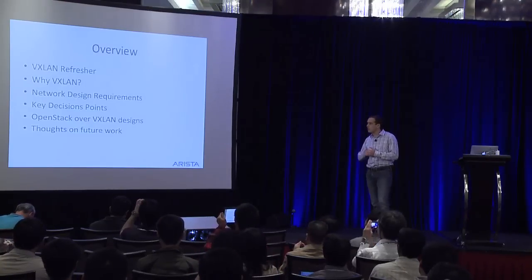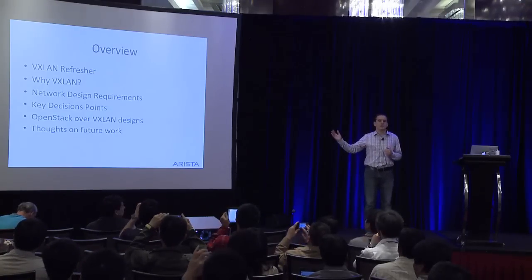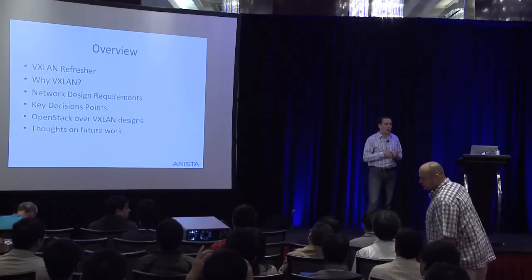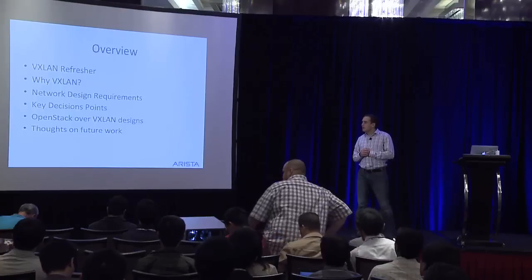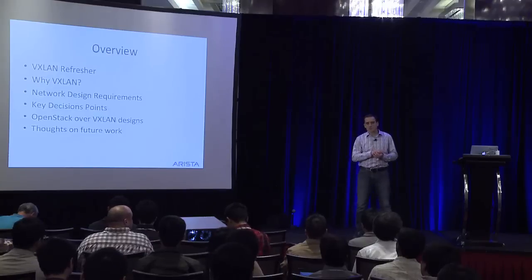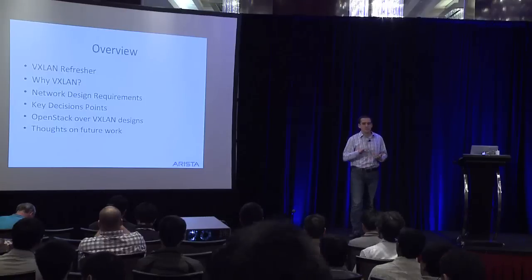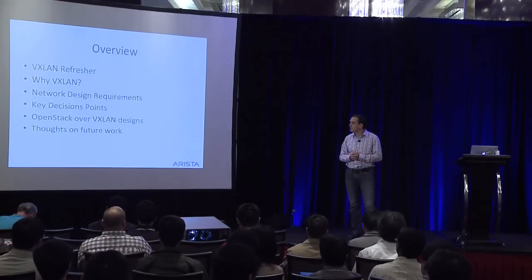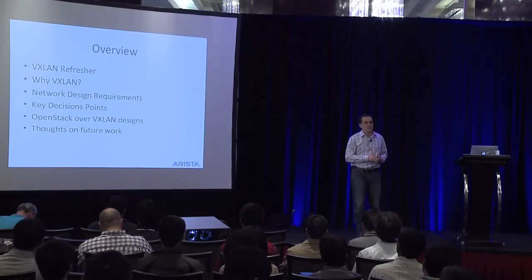The overview here: I want to talk a little about VXLAN and give a quick refresher for those who aren't familiar. I'll talk about why VXLAN might matter to you and why you might consider running it within your network. Then I want to go through the network design requirements — what you need to think about if you're going to run OpenStack on top of VXLAN, what decision points you have to make, and some of the trade-offs. Finally, I'll talk about designs that exist today and think about the future.